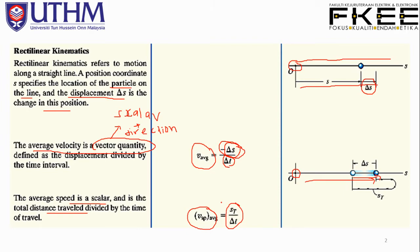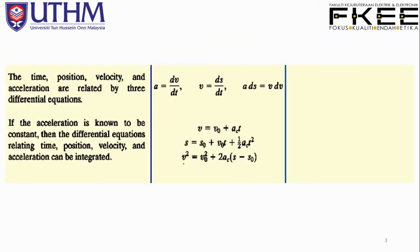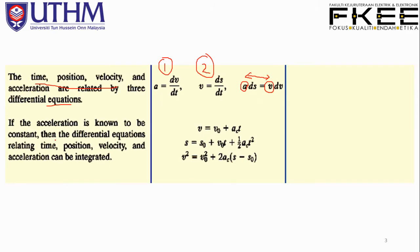Time, position, velocity, and acceleration are related by three differential equations: one for position (ds/dt), one for velocity, and one for acceleration. These relationships also connect acceleration and velocity.